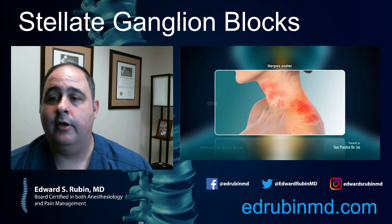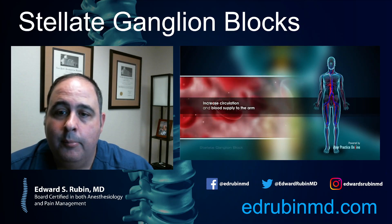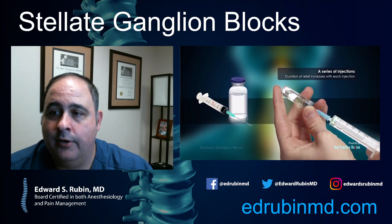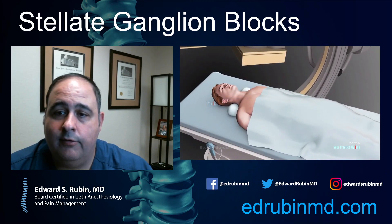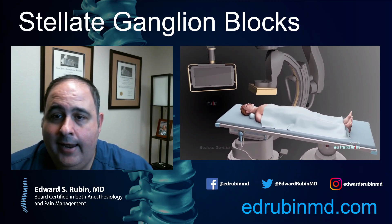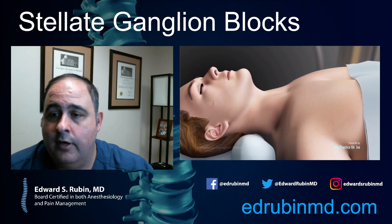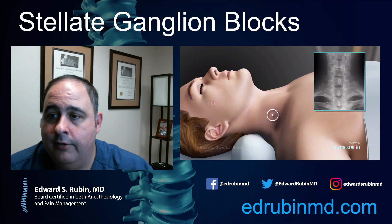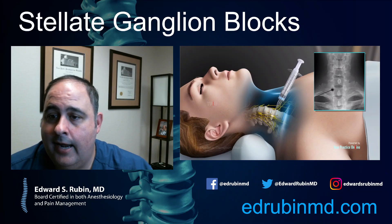It's an outpatient procedure done in a facility under x-ray guidance. From a pain standpoint, you're pretty much looking at complex regional pain syndrome as the main indication. It can be done as a series; typically we'll do just one to see how the patient does. The patient lays on their back. I use x-ray and ultrasound guidance, prep the neck, and inject a little bit of local into the skin to numb up the area. Using a combination of ultrasound and x-ray guidance, we're targeting a needle down to around C6–C7, in the front of the neck — not near the spinal nerves — targeting the stellate ganglion.